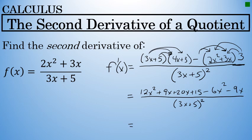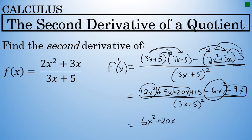The denominator (3x + 5)² I'll leave unchanged. My final step to find this first derivative is to collect like terms in the numerator. I have 12x² − 6x² = 6x², then 9x + 20x − 9x = 20x, and a constant of +15. So the first derivative of f(x) is (6x² + 20x + 15) / (3x + 5)².